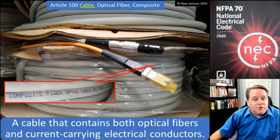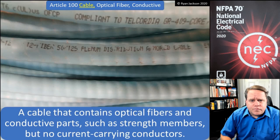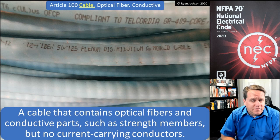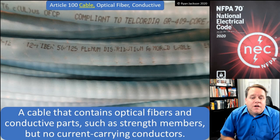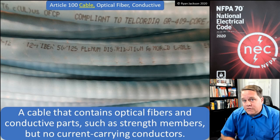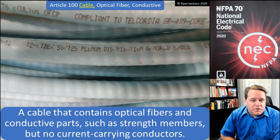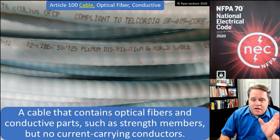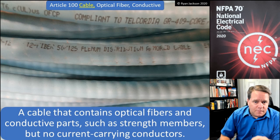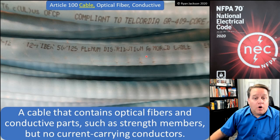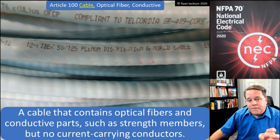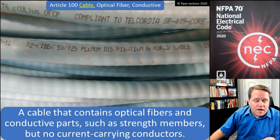We've also got conductive optical fiber cable, and that's a cable that contains optical fibers and conductive parts like strength members, but no current-carrying conductors. This is a conductive optical fiber cable — you can see it says 'armored cable' right on it. So this is just optical fibers inside, and you can see up here this is optical fiber conductive plenum rated.